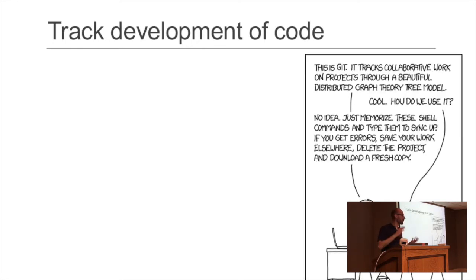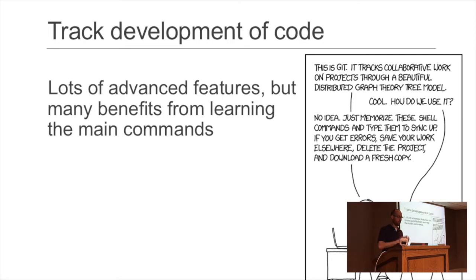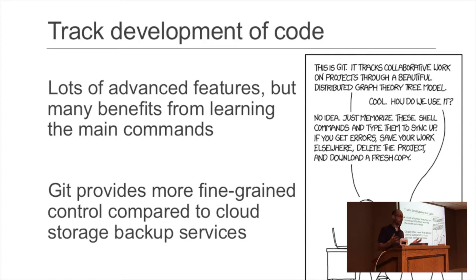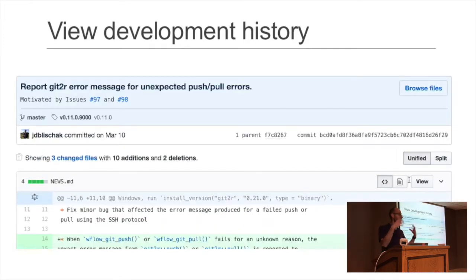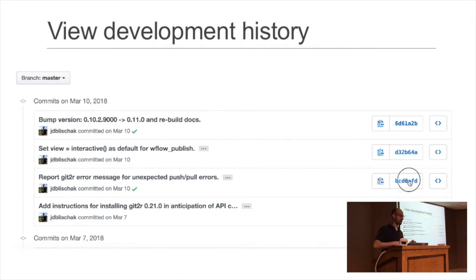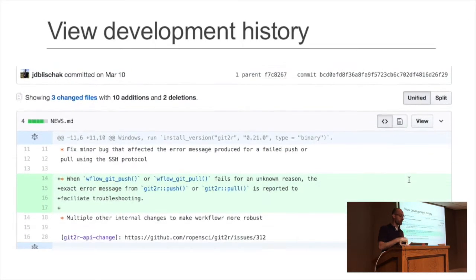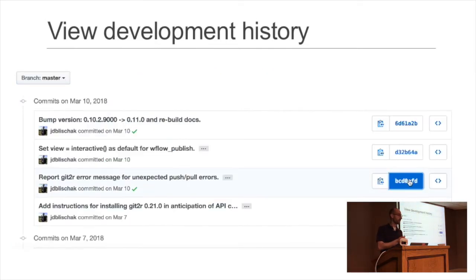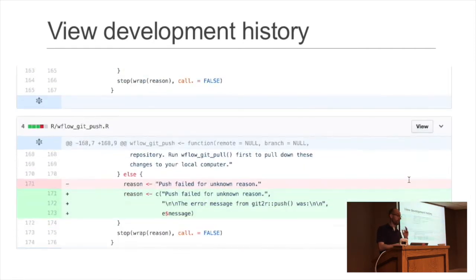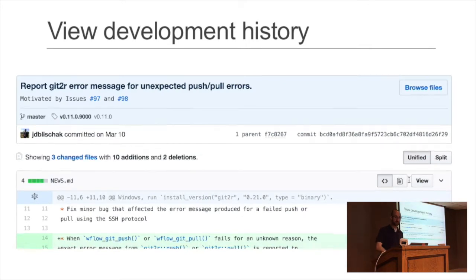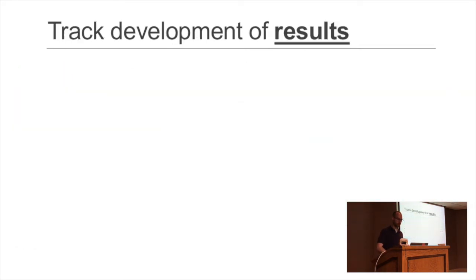To track development of code we used Git, which doesn't have the best reputation — it can be a little arcane because it has lots of features for big teams of software developers. But my small team, by just using the main functions, got the majority of the benefit we needed. It also gave us much more fine-grained control — unlike Dropbox, if two people edit a file it doesn't just create two conflicting copies. What's critical for a science project is you have the context of every decision: Git requires a commit message each time you update the code, so three months later I can always see why I made a change.